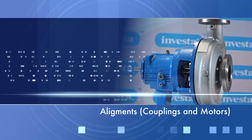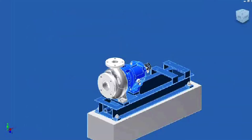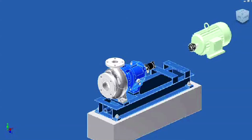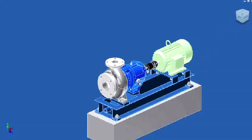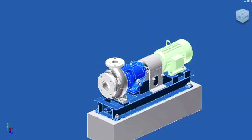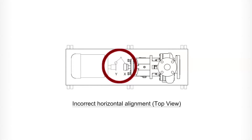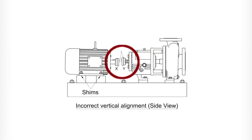Alignments, coupling and motors. Two improper ways of alignment can be corrected by horizontal correction and vertical correction.